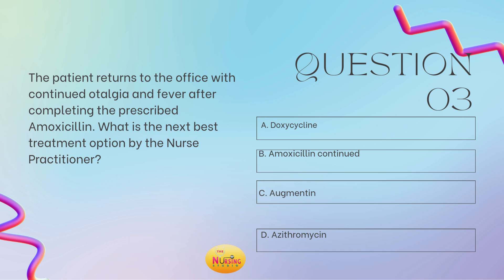The stem of the question states: what is the next best treatment option? This is huge — it's asking for the next and best step. The patient comes back with continued otalgia and fever, and they've already completed the amoxicillin, that first-line therapy for acute otitis media. Second-line therapy for acute otitis media is C, augmentin. Remember — think of the A's: A for acute otitis media, A for first-line amoxicillin, A for augmentin for second-line therapy, and A for azithromycin for third line.